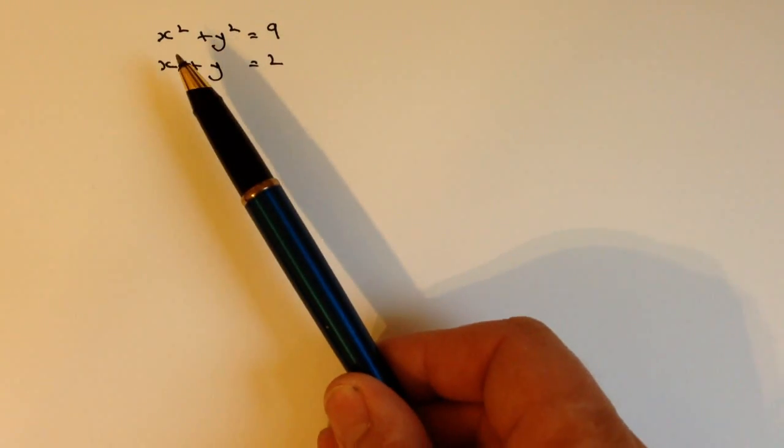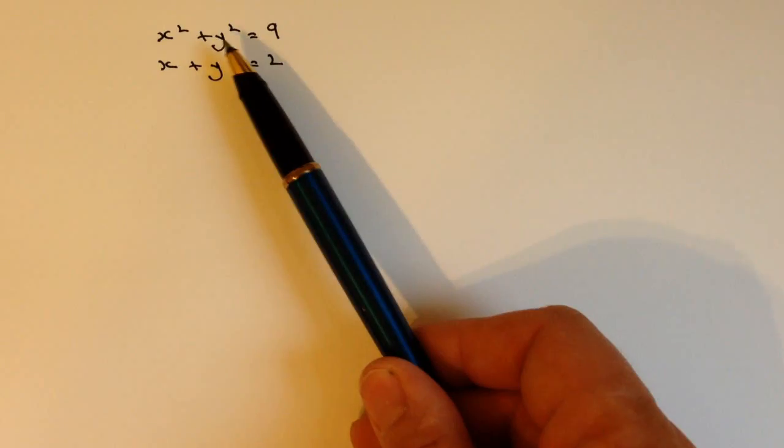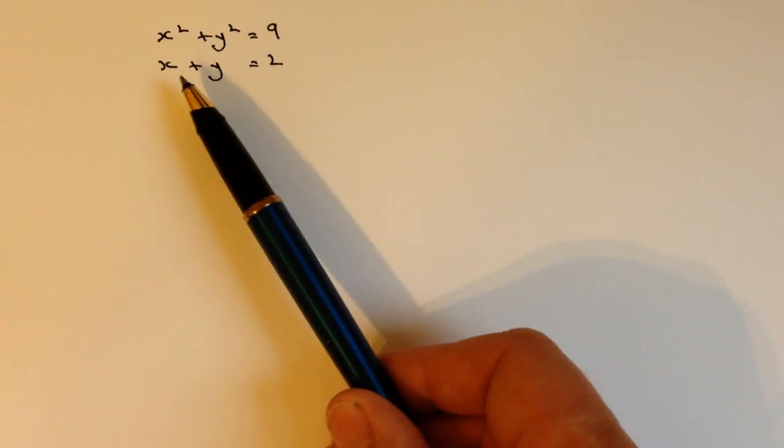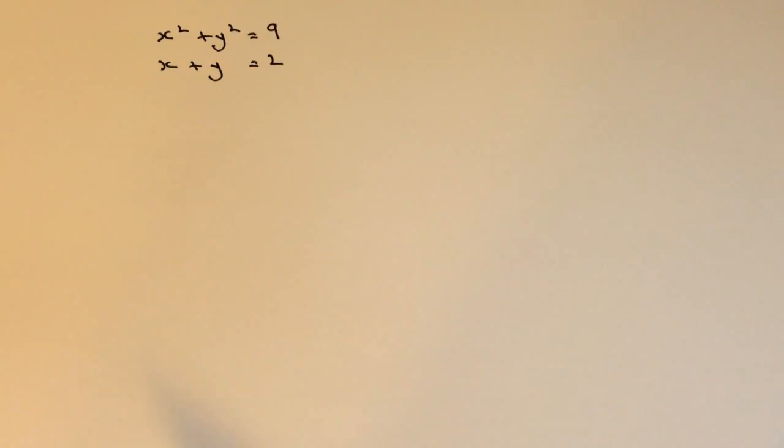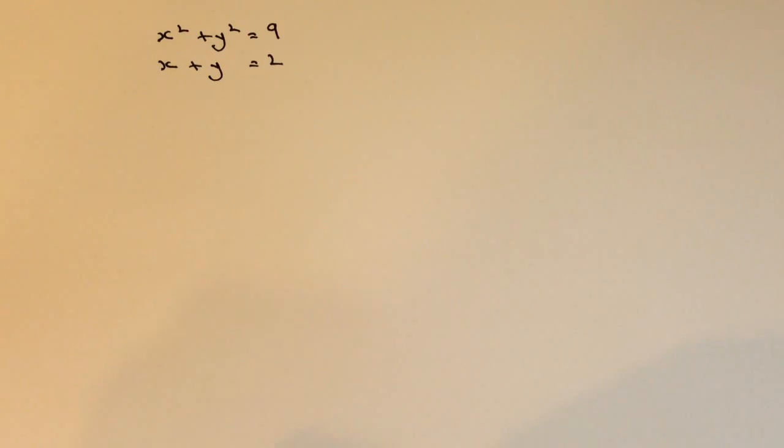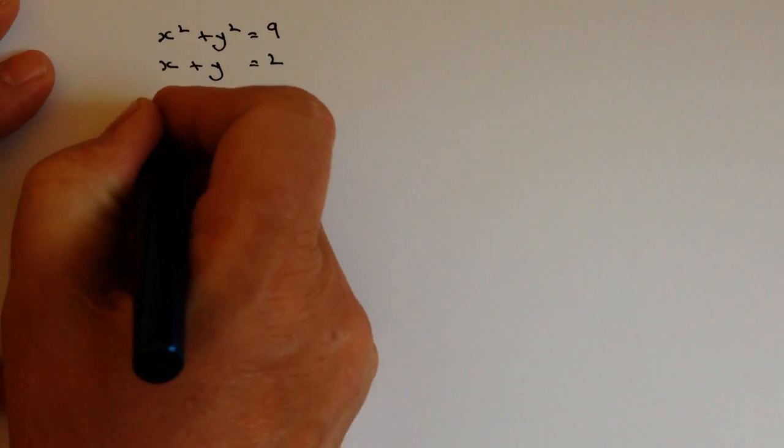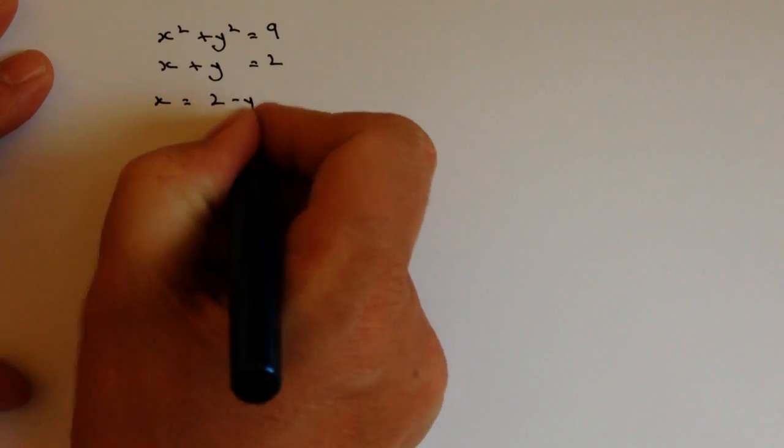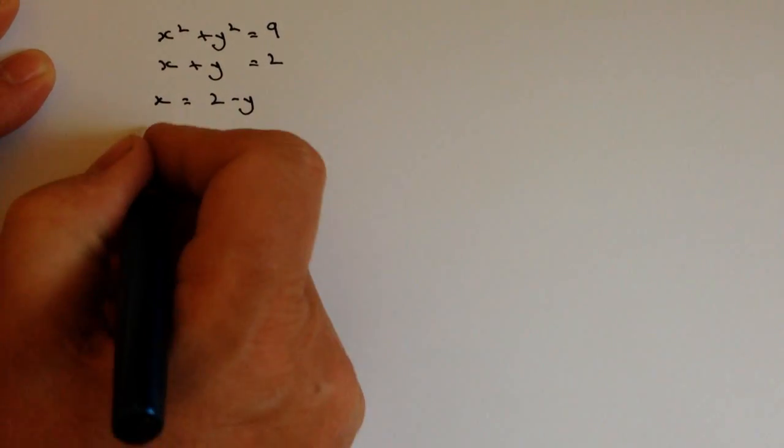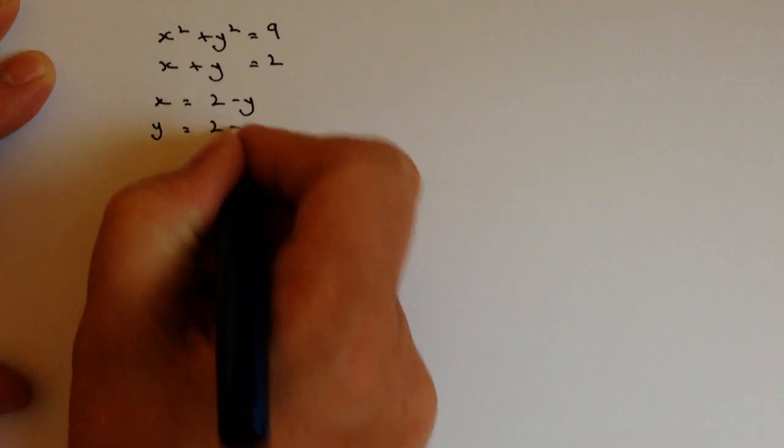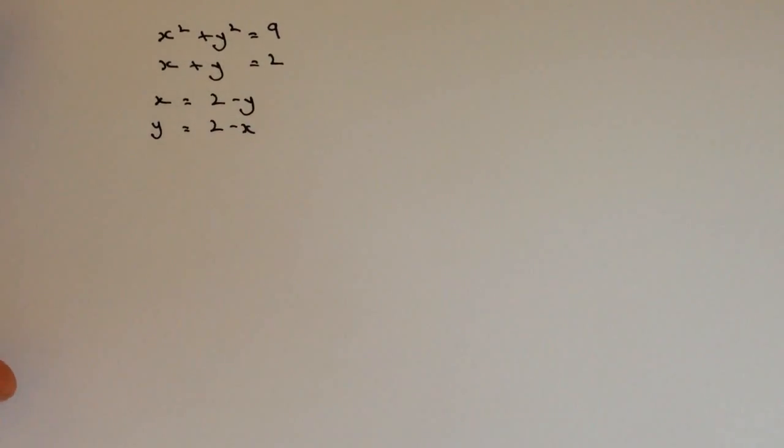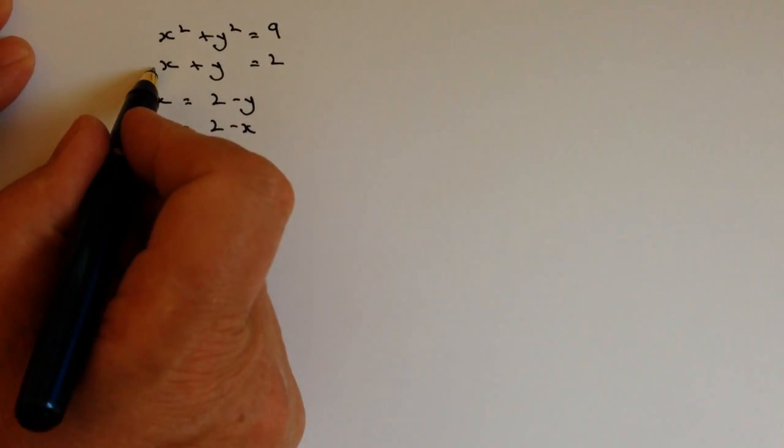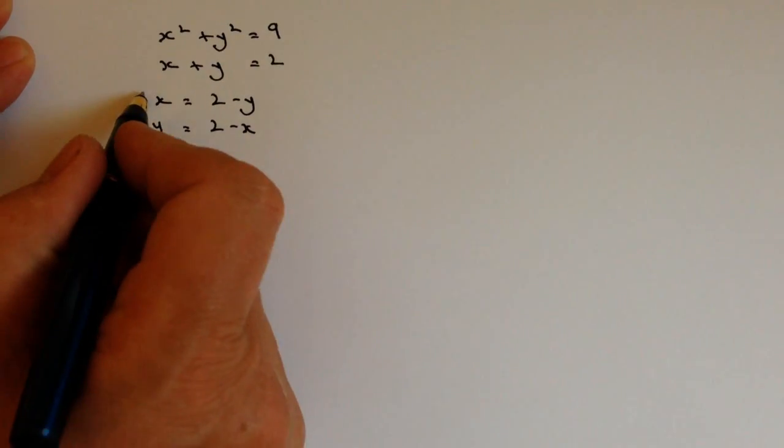So the first thing is you've got two equations which are operating together. So you've got x squared plus y squared equals 9. You've also got x plus y equals 2. Well the good thing about the second equation is that it also allows us to write this. We can say that x equals 2 minus y and we can also write y equals 2 minus x. And all I've done really is taken this second equation and rewritten it.